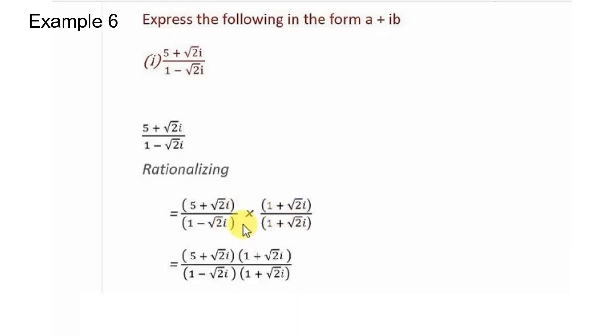When we rationalize the denominator terms, we can solve using this identity: a squared minus b squared equals (a plus b)(a minus b). This is in that form, so we can use a squared minus b squared. That will be 1 squared minus (root 2i) squared.